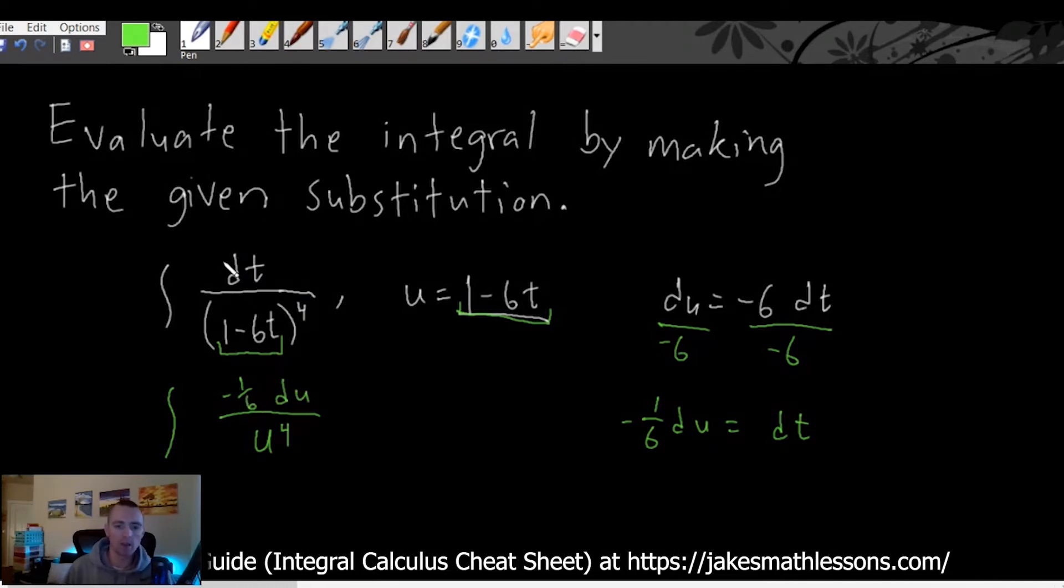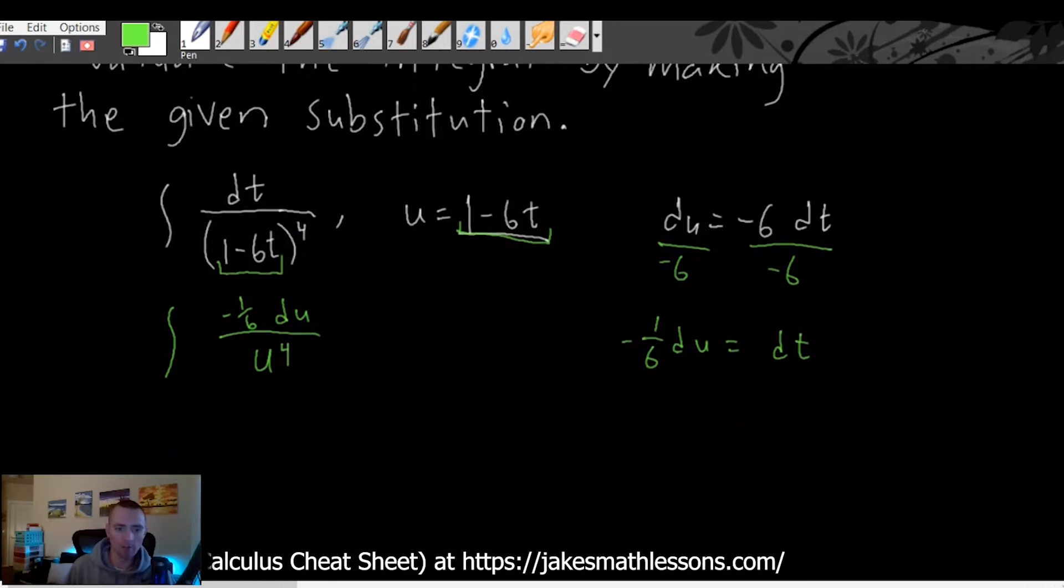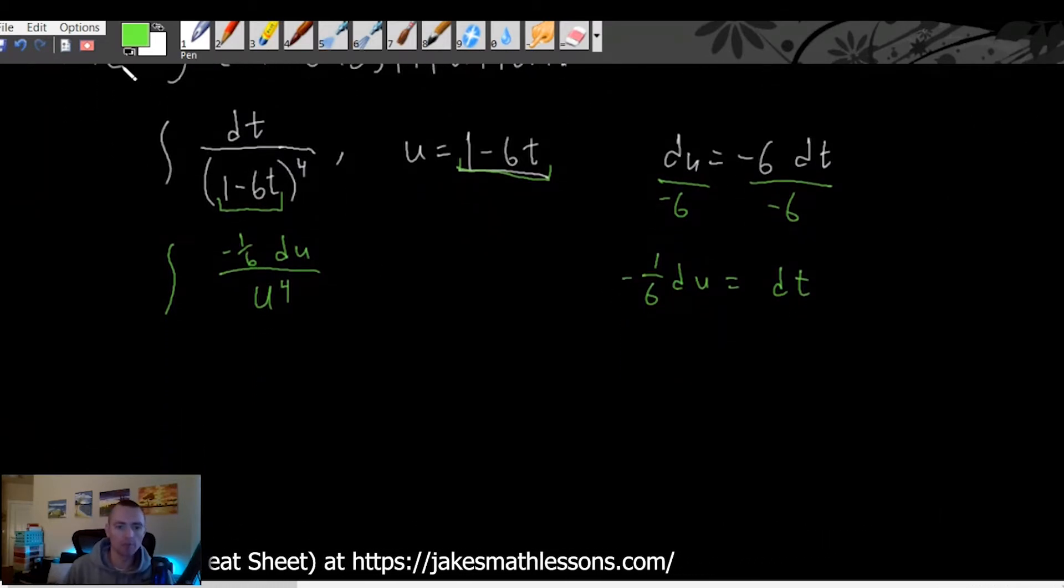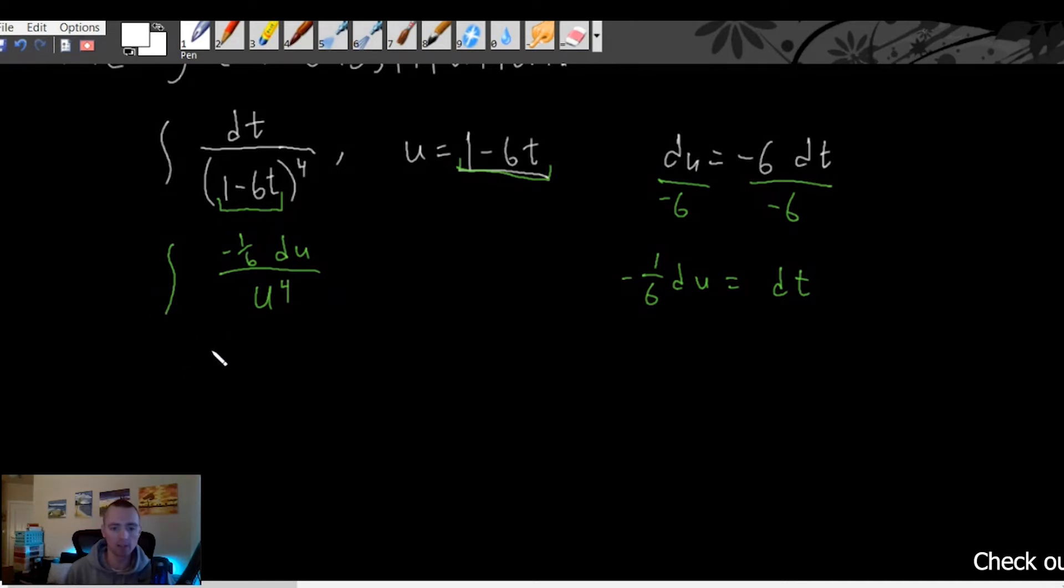So now once we've done that there's a couple things to point out right off the bat here. First of all the numerator of this fraction is just a constant negative one six times this du. So whenever we have a constant, well in this case I should clarify that whenever we have a constant times a bunch of other stuff which we can rewrite this as a constant negative one six times du over u to the fourth.